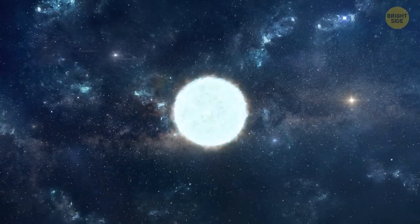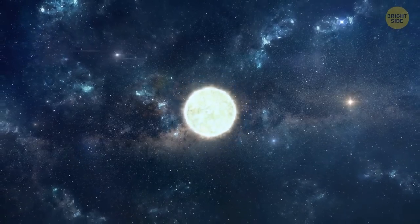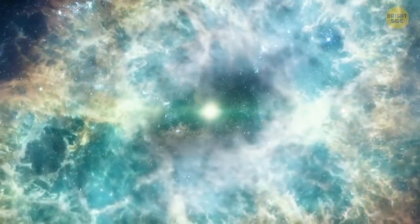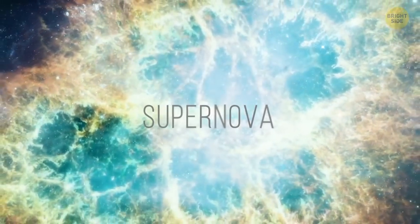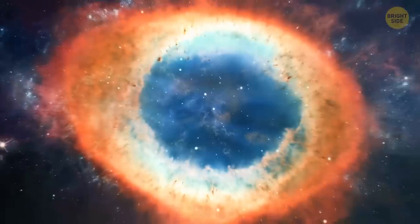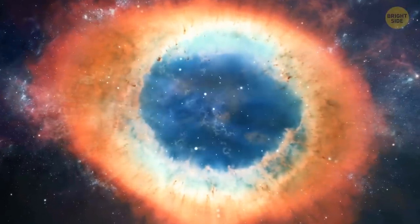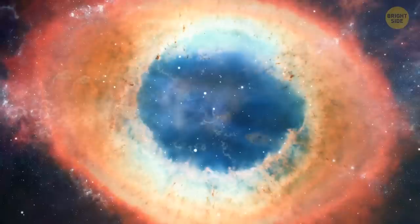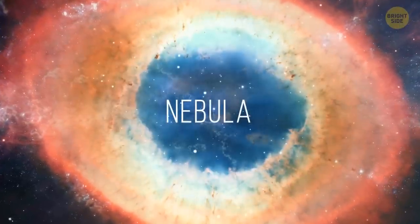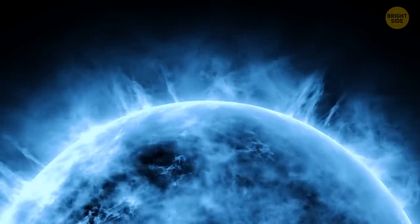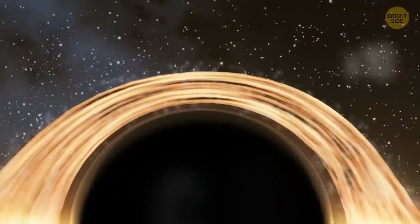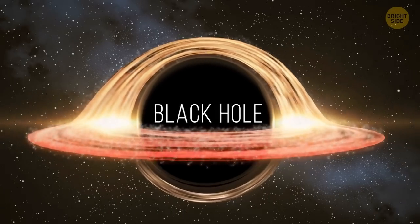It happens so fast that an enormous shockwave causes the outer part of the star to blow up. It produces a blinding burst of light. This powerful blast is called a supernova. What's left behind is an incredibly dense core with a huge cloud of hot gas called a nebula expanding around it. If the star has been massive enough, more than 10 times the size of the sun, it's likely to turn into a black hole.